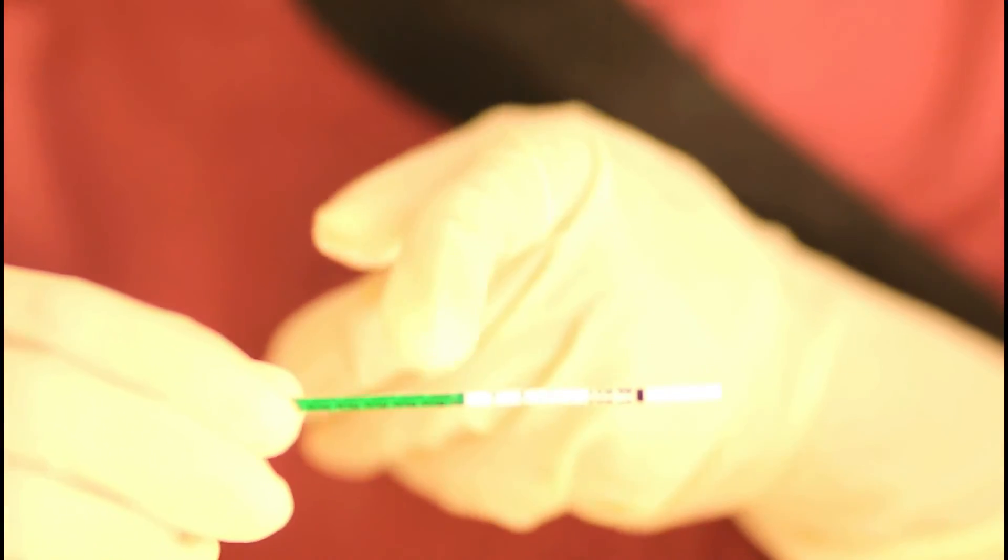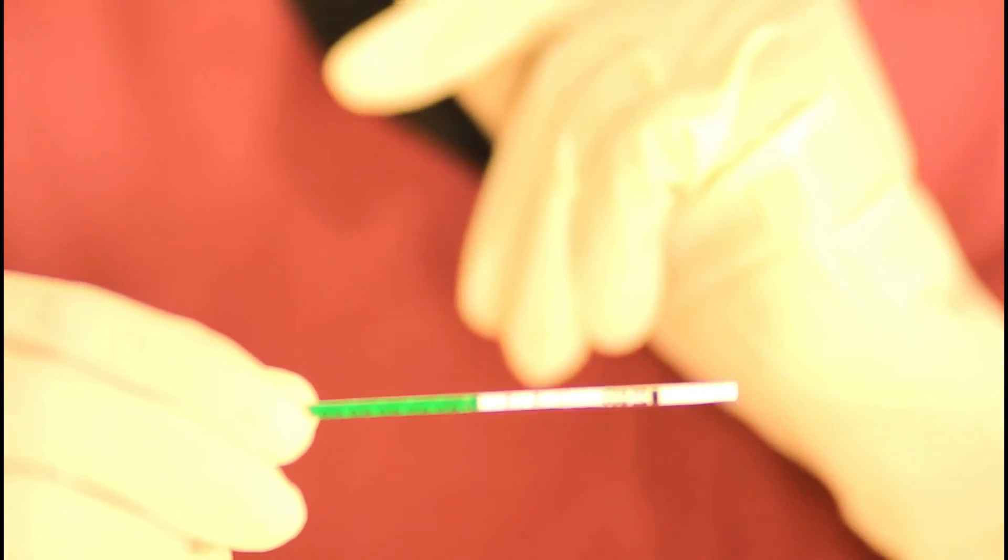Five minutes is over and unlike the first test we can see that we have two lines. The control line as usual is there and there's a second line which is the test line that shows that it is positive. Let's put the first test so that you can see. The first one is the negative result and the second is the positive result.